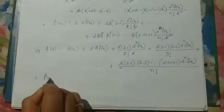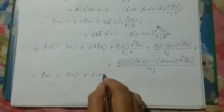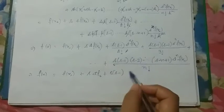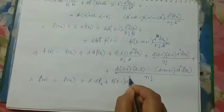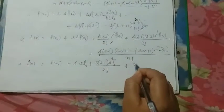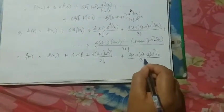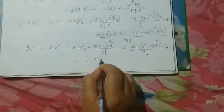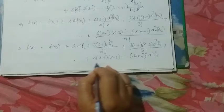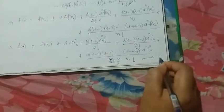Now I will modify the notation. Instead of writing f(x₀) I will write f₀, instead of Δf(x₀) I will write Δf₀, and instead of Δ²f(x₀) I will write Δ²f₀ divided by factorial 2, plus s(s-1)(s-2)·Δ³f₀ divided by factorial 3, and so on. Let this be equation number 2.